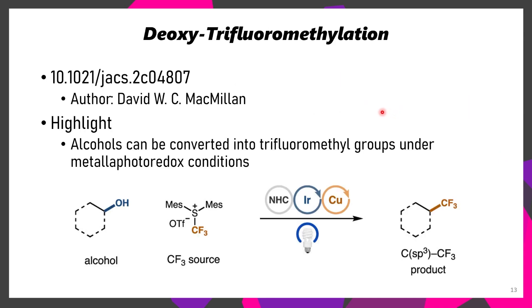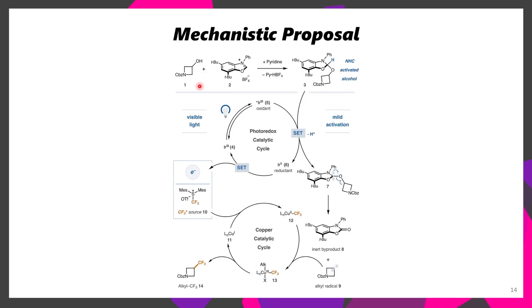The second paper for today is the deoxytrifluoromethylation of aliphatic alcohols. The reaction works as follows: initially, this alcohol reacts with an NHC group, forming an NHC-activated alcohol. Under photochemical conditions, iridium is able to be excited to its oxidant state, converting the NHC-bound alcohol to the corresponding carbamate, which also liberates a carbon-centered radical. Meanwhile, our copper(I) species reacts with a sulfonium trifluoromethylating agent, oxidizing the copper(I) to a copper(II) species. Once this copper(II) CF3 species is present, the radical adds to the copper(II), forming a copper(III) species, followed by subsequent reductive elimination, affording the trifluoromethylated product and regenerating the copper(I) catalyst.